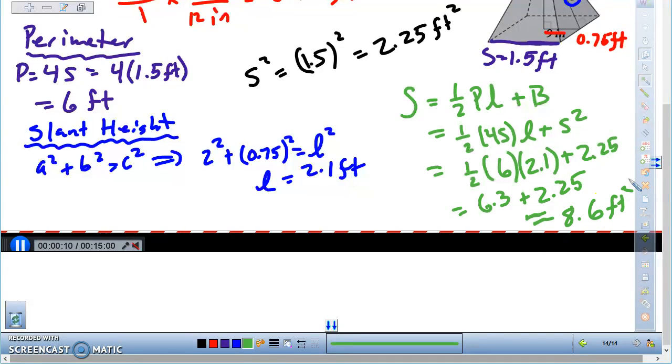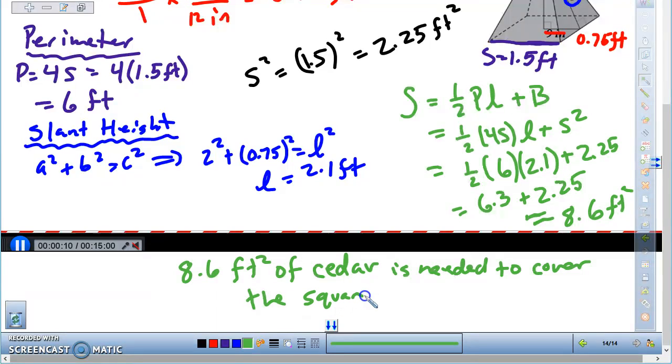So we could go ahead and write a sentence. We would say 8.6 square feet of cedar is needed to cover the square pyramid, and that is that. If you like the video, please give me a thumbs up and subscribe.